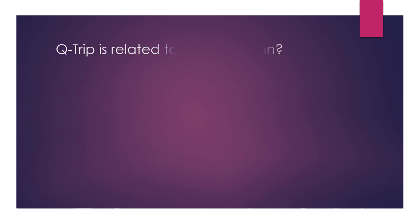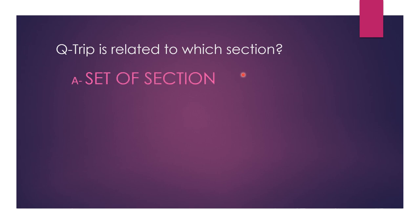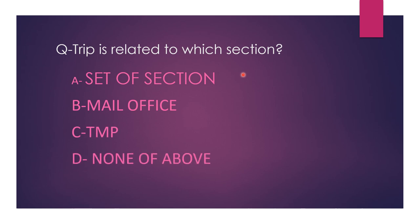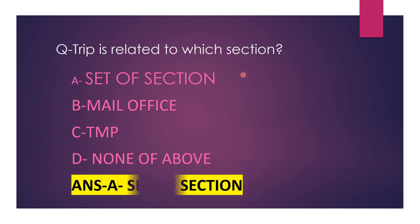Next question. Trip is related to which section? Options: A — set of section; B — mail office; C — TMP; D — none of the above. The correct answer is option A, set of section.